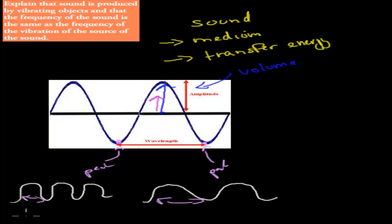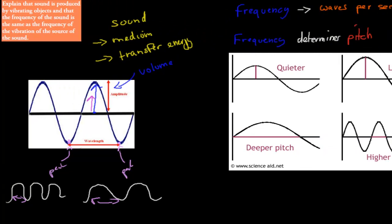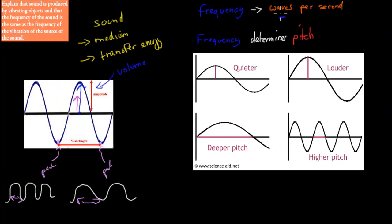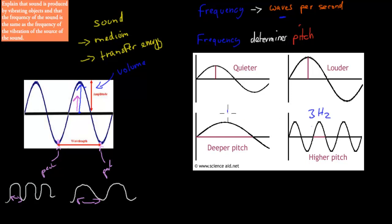So that's wavelength and amplitude. We said that frequency was waves per second. Comparing these two diagrams, you can see here are three waves versus one wave, so this would have a higher frequency. This one would be 3 Hz and this one would be 1 Hz. So having a higher frequency means more wavelengths — there's a connection between frequency and wavelength.